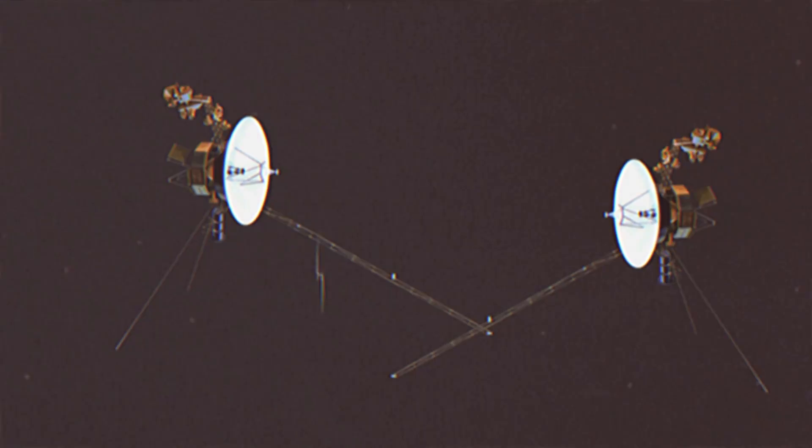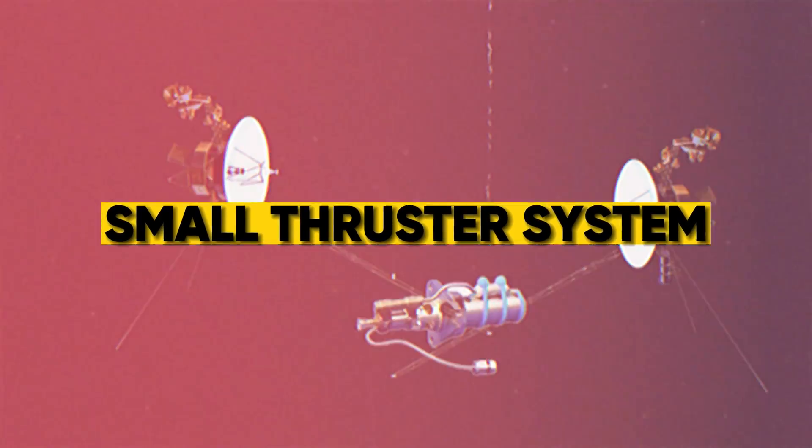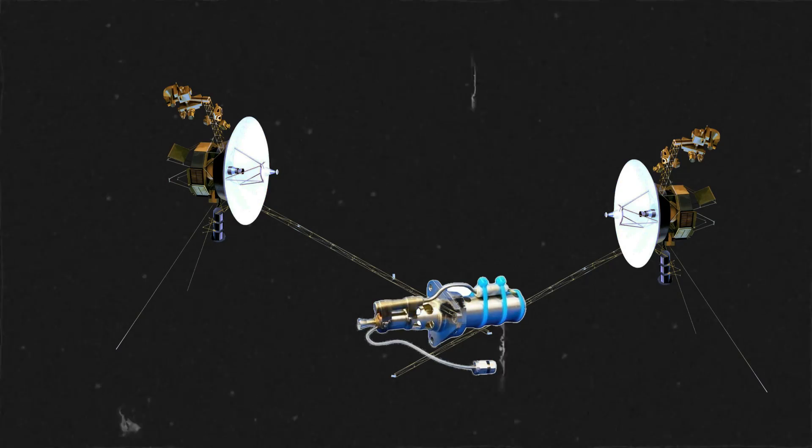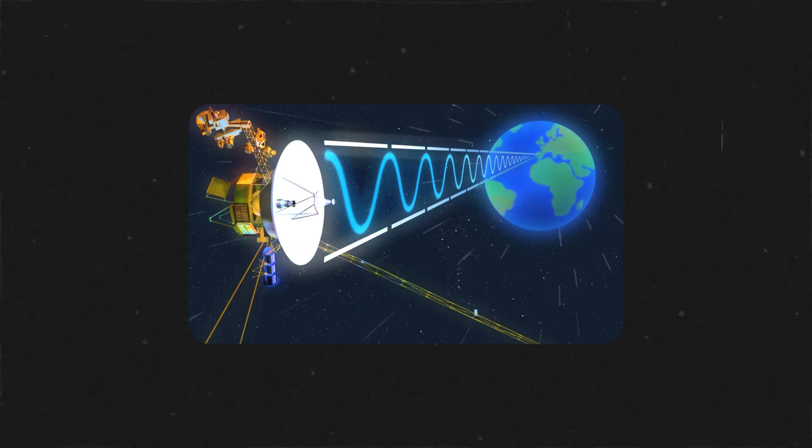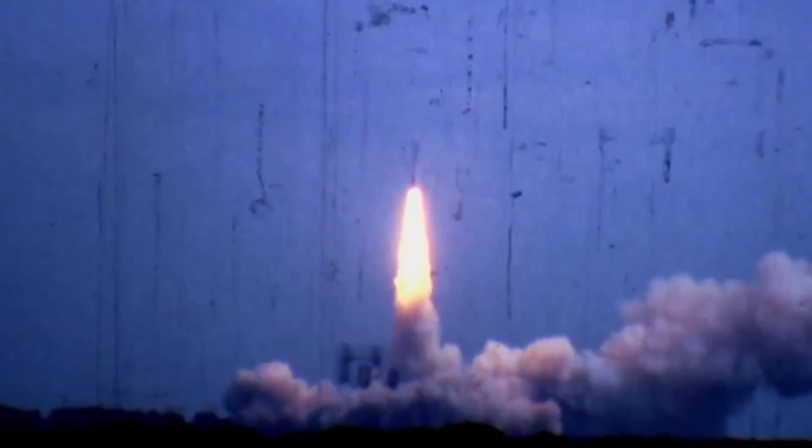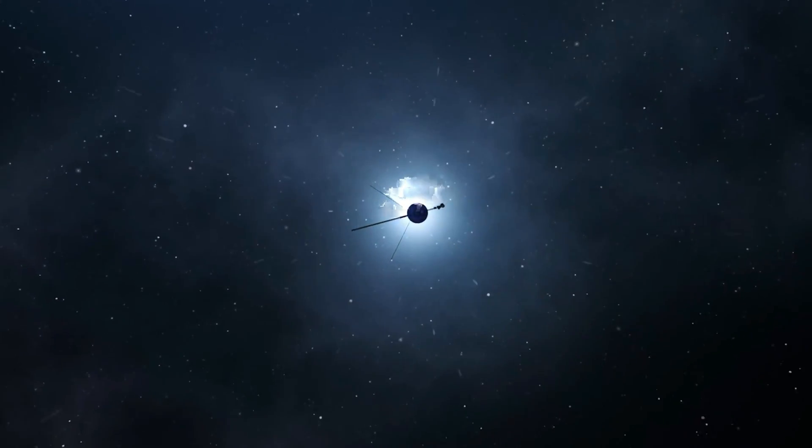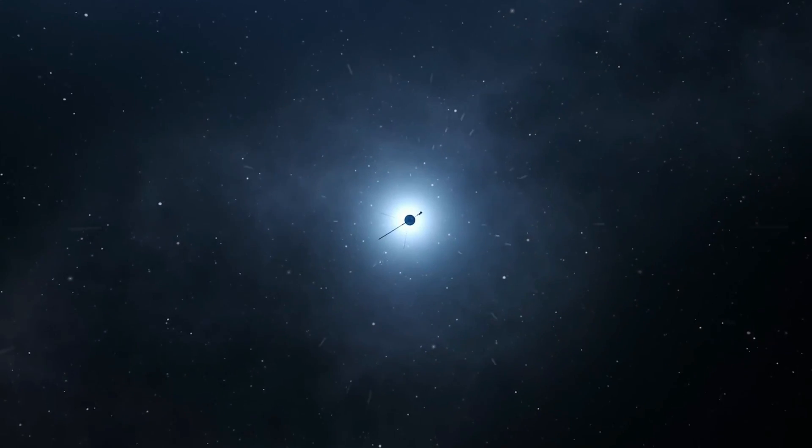Additionally, both Voyagers carried a small thruster system that allowed them to adjust their course during their journey and a radio transmitter for communication with Earth. Despite being launched more than 40 years ago, both Voyager 1 and Voyager 2 continue to send back valuable data about the outer reaches of our solar system.